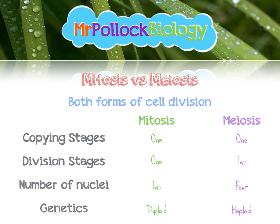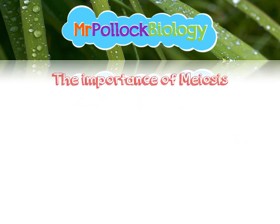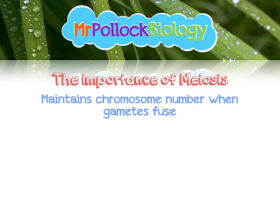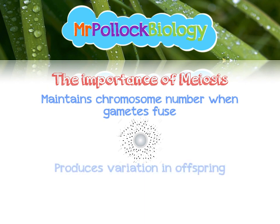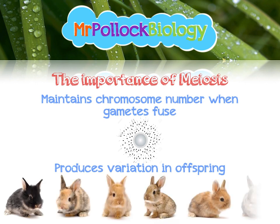Let's look at the importance of meiosis. It maintains the full diploid chromosome number when gametes fuse. Gametes are haploid, so when they fuse together they form a diploid organism. Without haploid gametes, the chromosome number would double every generation, which is generally not useful. The other great thing about meiosis is that it produces a huge amount of variety and variation in offspring.